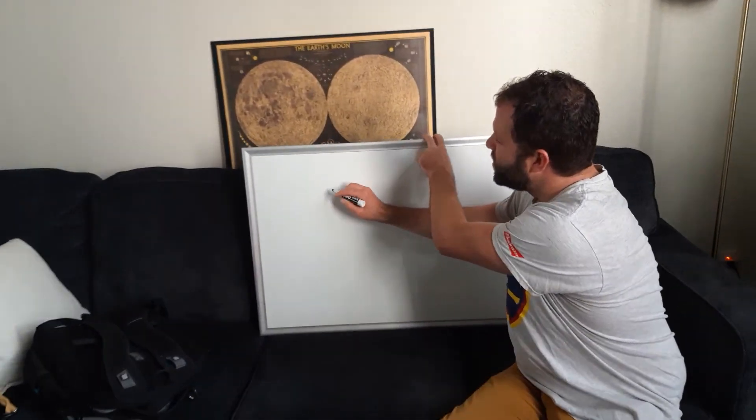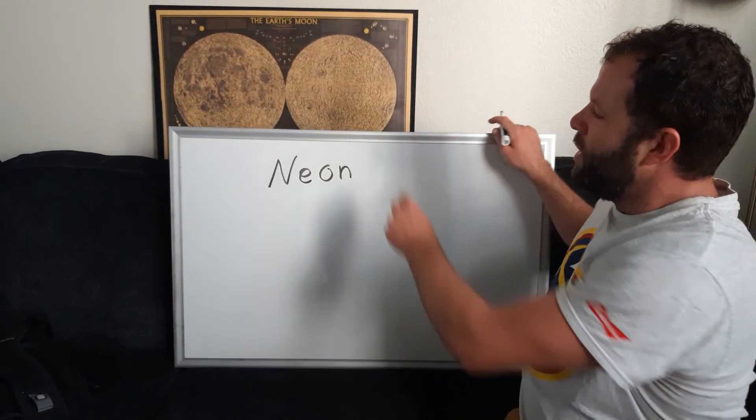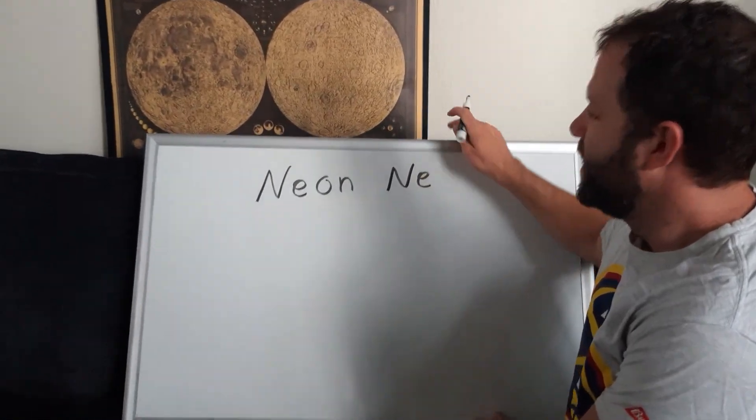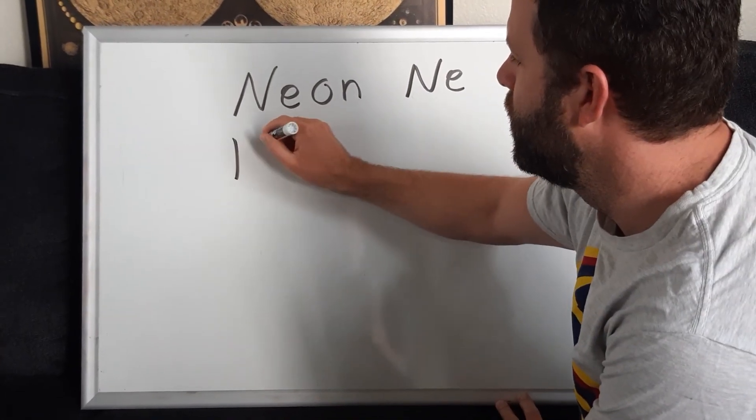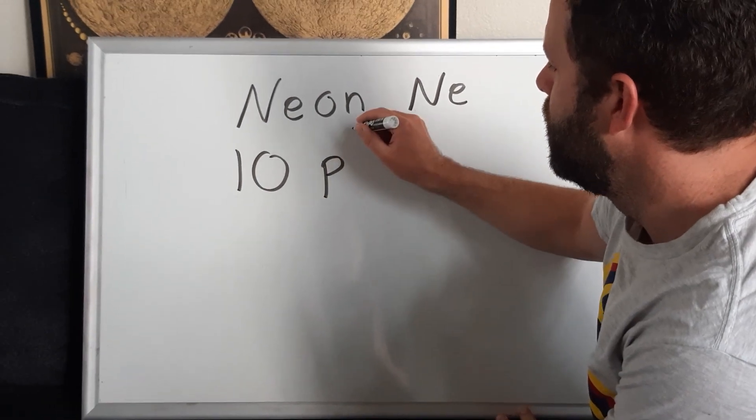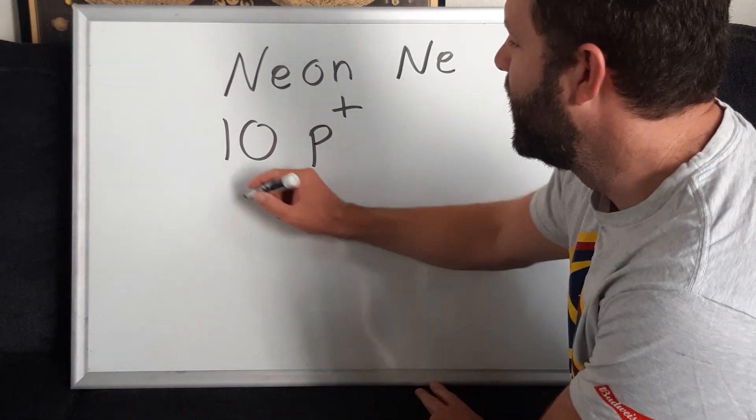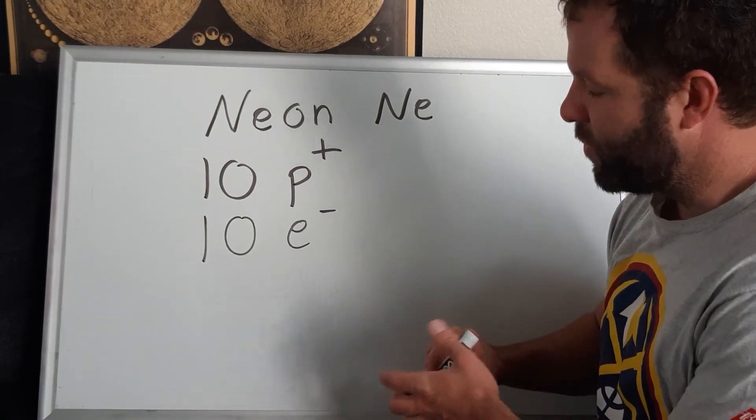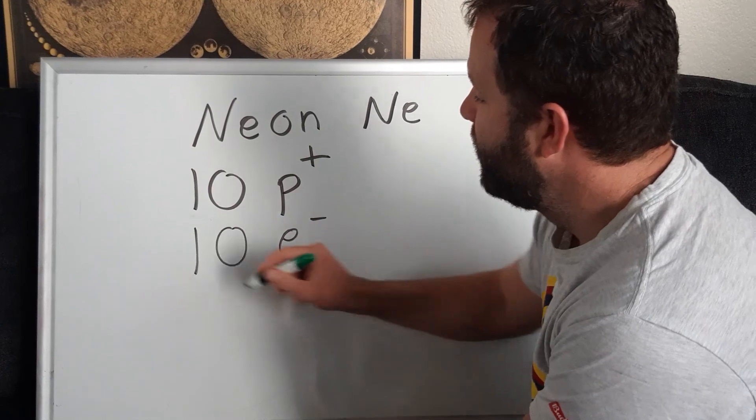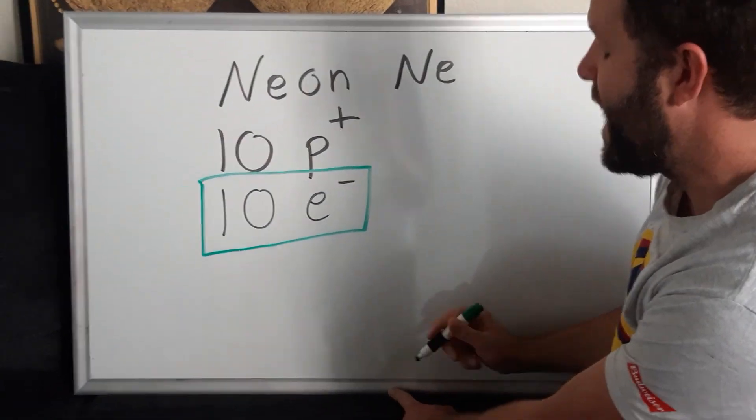For our example we're going to start with the element neon. Now neon Ne is element number 10 on the periodic table, which means it has 10 total protons and an atomic number of 10. Now a neutral atom of neon is also going to have 10 total electrons. It's these 10 total negative electrons that we're going to work with.